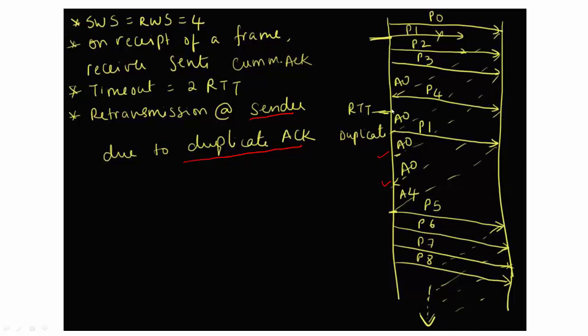I'm going to ignore these other duplicate acknowledgements because I already acted on the first duplicate acknowledgement. Once I get an acknowledgement for all the packets after receiving P1, then I'm going to send the remaining packets. As you saw, recovery in this case was much faster than with timeout, so this is more efficient.